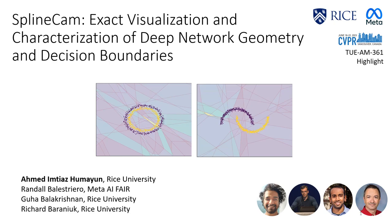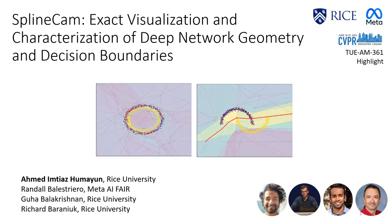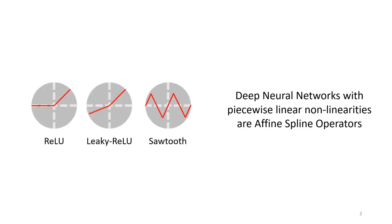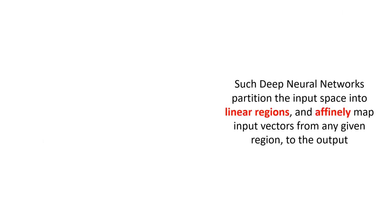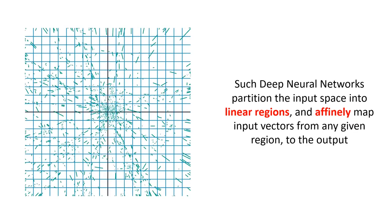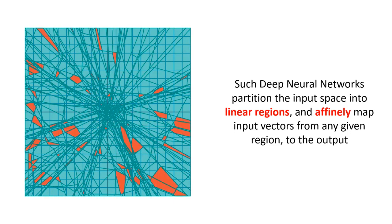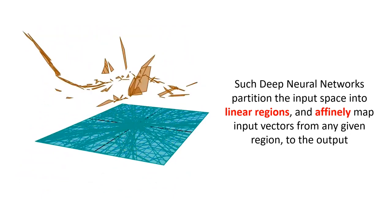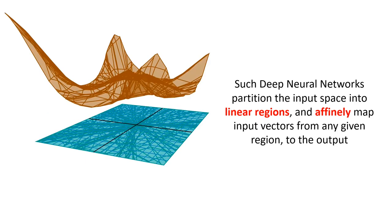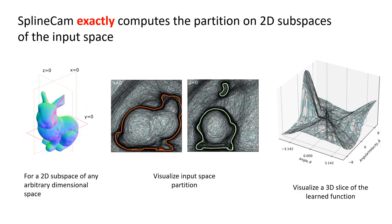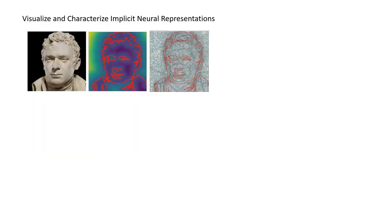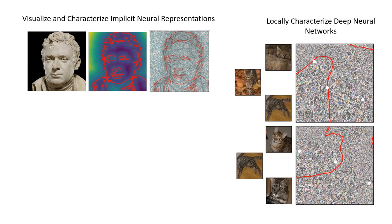We present SplineCam, a framework for exact visualization and characterization of deep neural network geometry and decision boundaries. Deep neural networks with piecewise linear activations like leaky ReLU are affine spline operators, meaning a DNN partitions its input space into linear regions and affinely maps input vectors from any given region to the output. A lot like origami, deep neural networks fold, bend, and stretch the input space to fit any given function. SplineCam is the first method to exactly compute these folds or partitions formed by a neural network on arbitrary 2D subspaces of the input space. We provide SplineCam as a PyTorch toolbox that can be used to visualize and study implicit neural representations and locally characterize deep neural networks based on partition statistics.